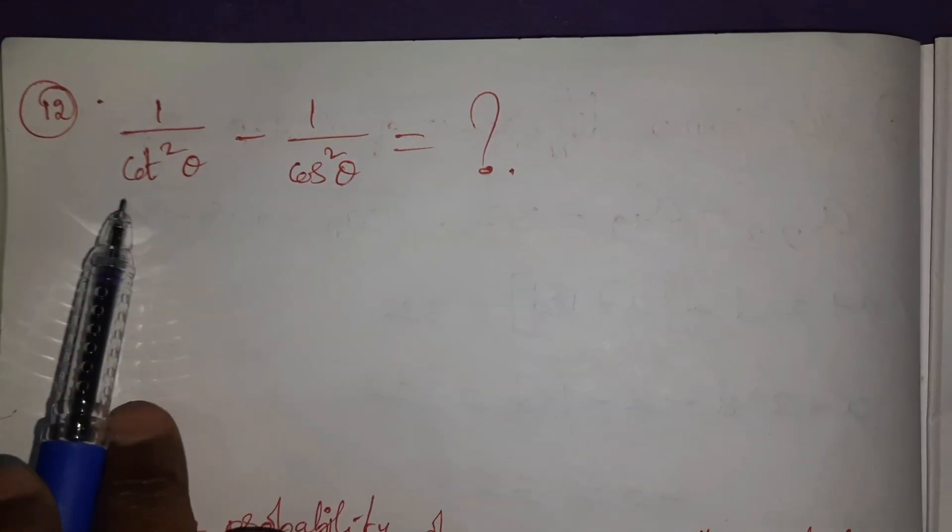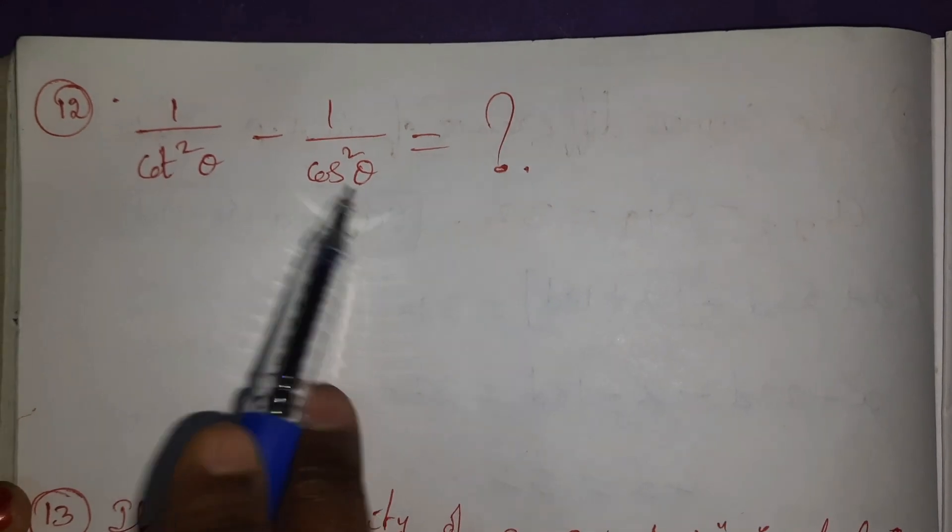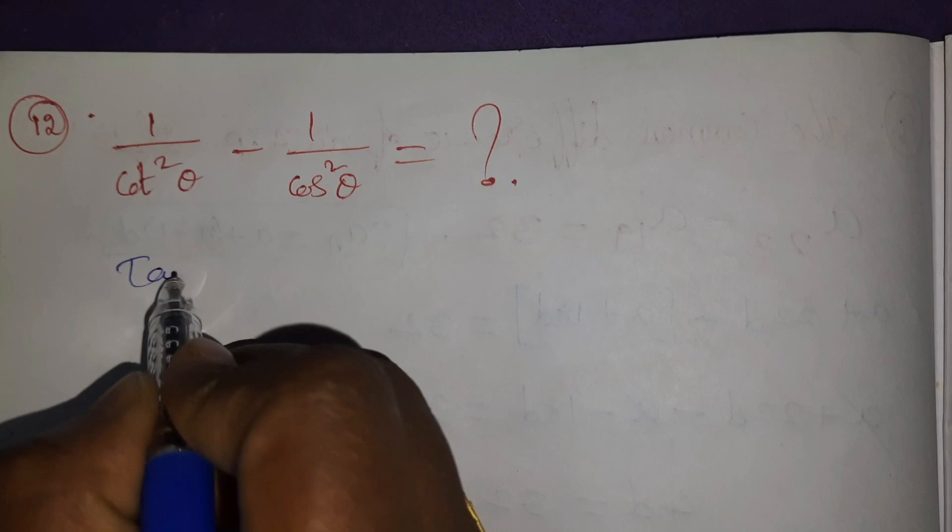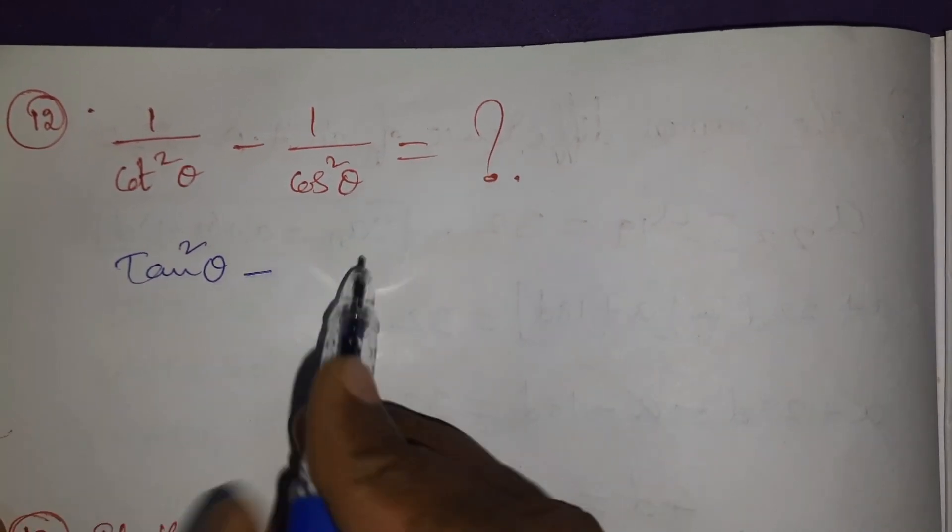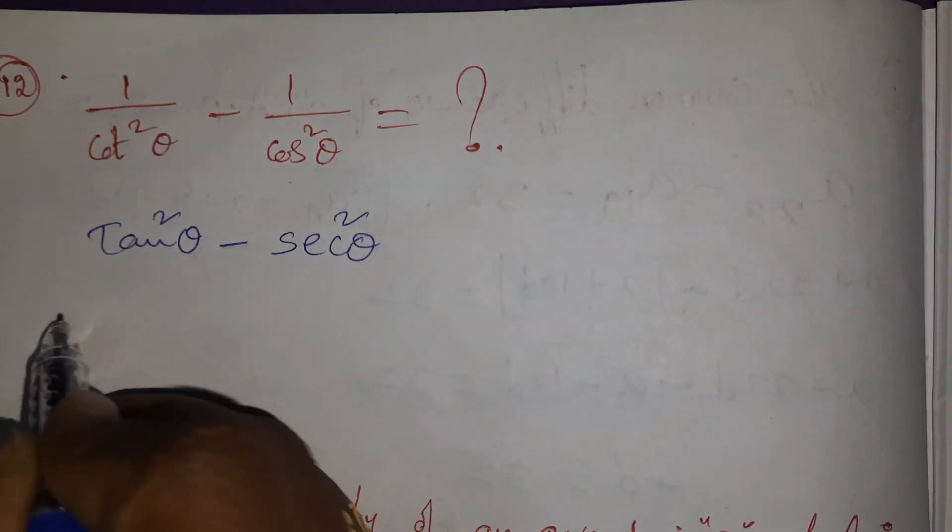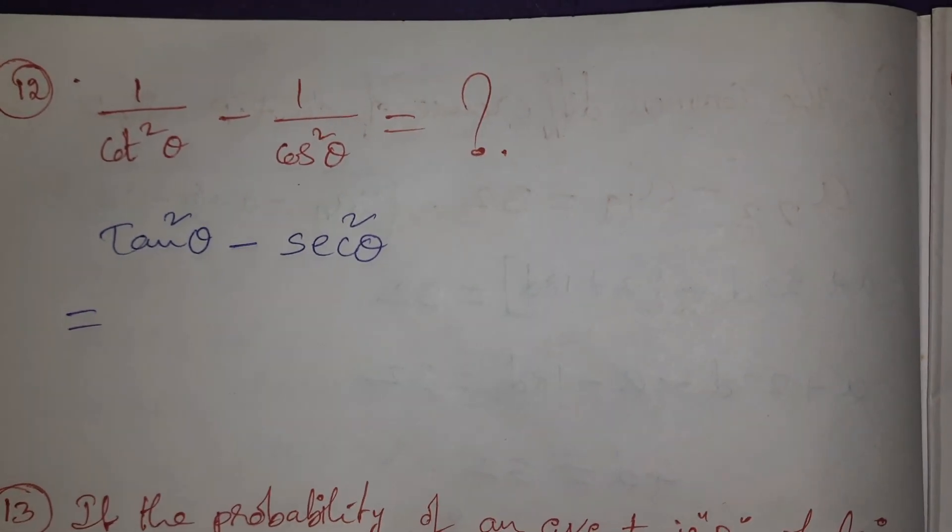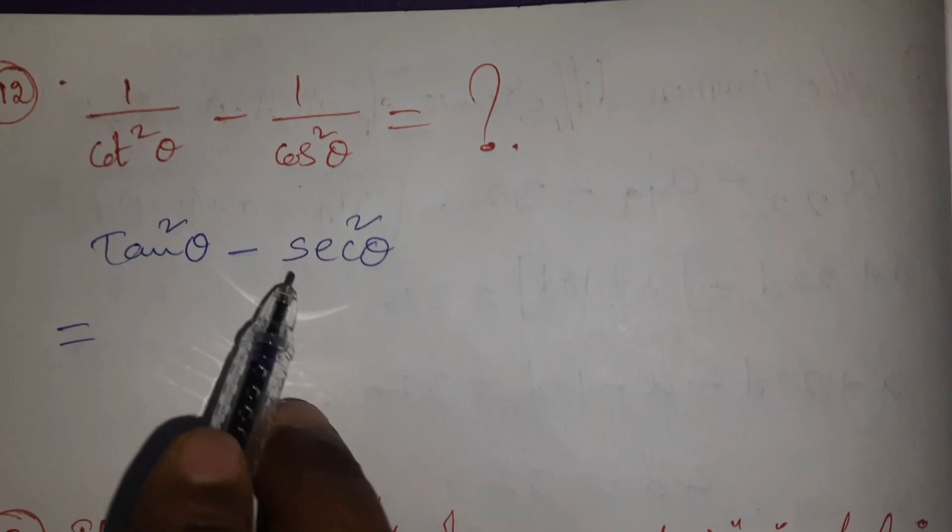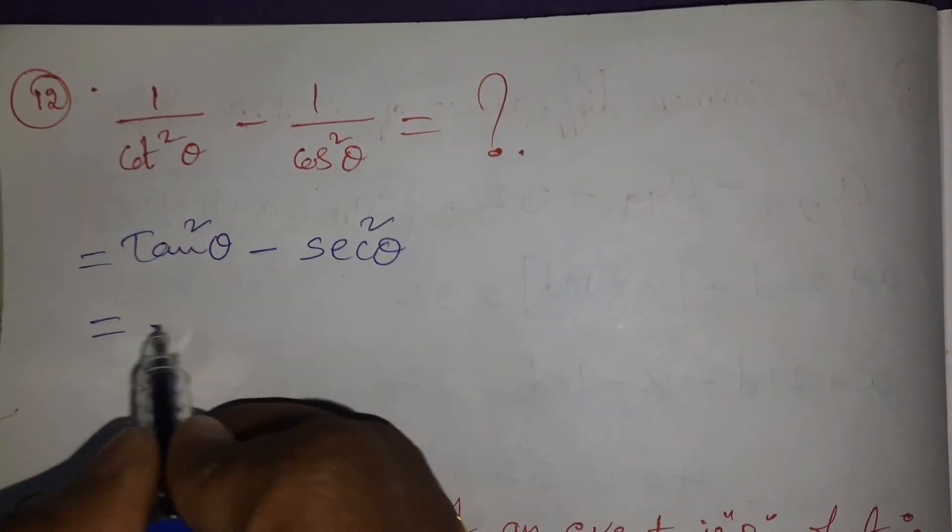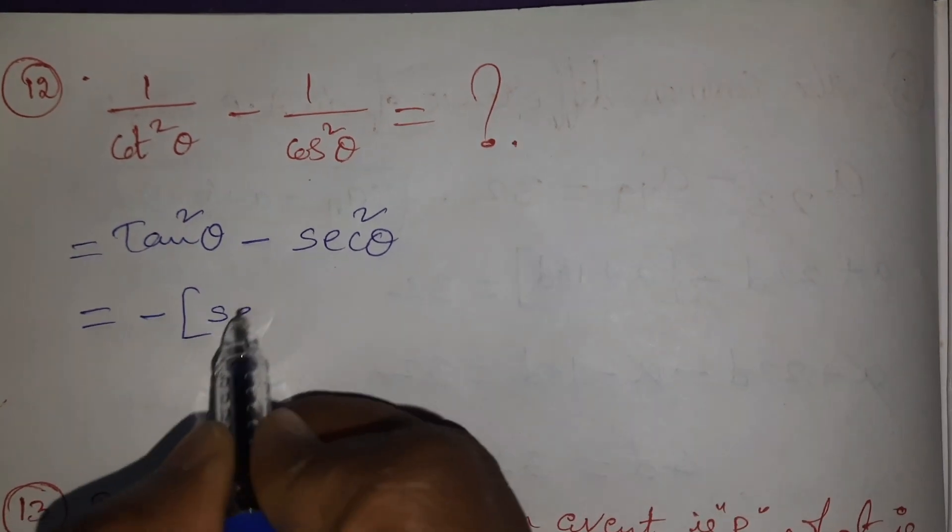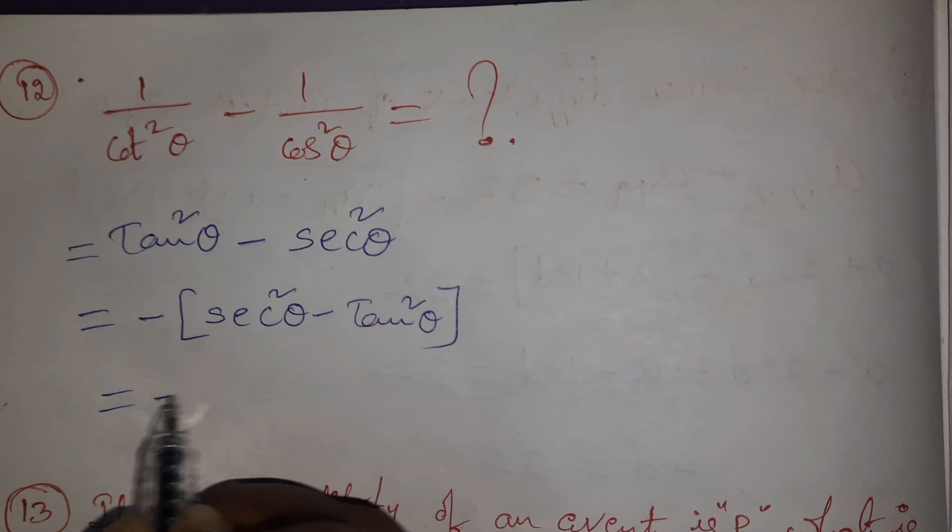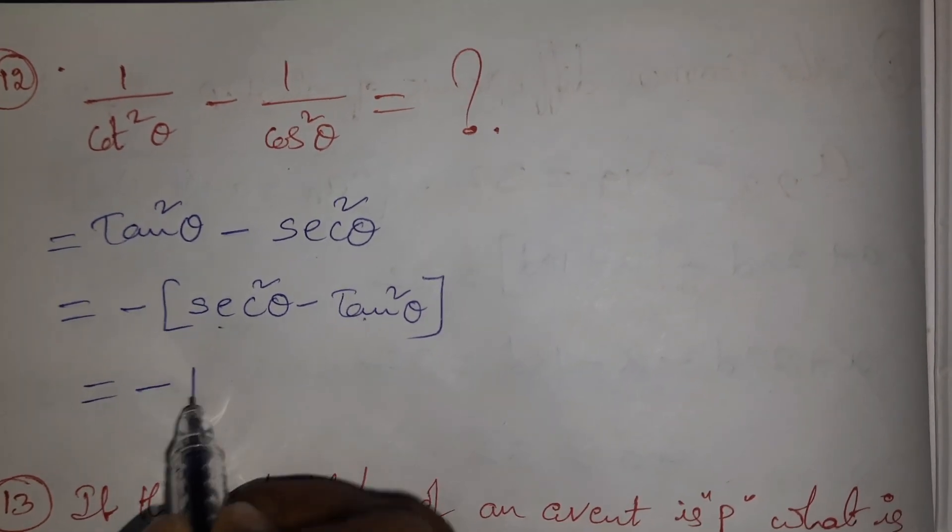Find the value of 1/cot²θ - 1/cos²θ. Cot reciprocal is tan, so 1/cot² I can write as tan²θ. Cos reciprocal is secant, so secant²θ = we have identity in trigonometry, second identity: sec²θ - tan²θ. But here reverse is done, so I am taking minus common: sec²θ - tan²θ. Minus (sec²θ - tan²θ) = -1.